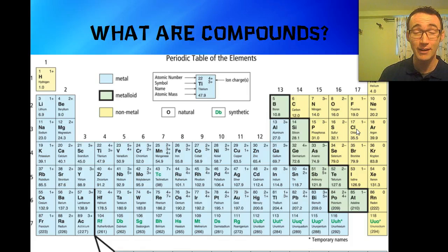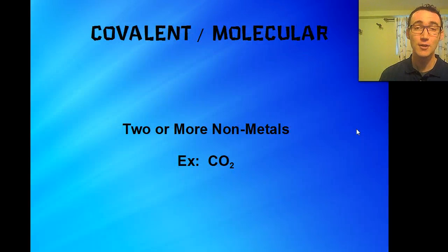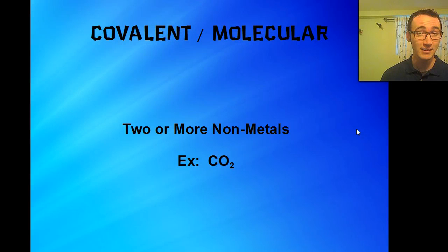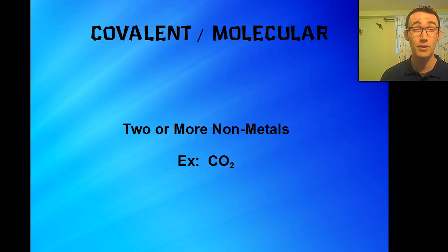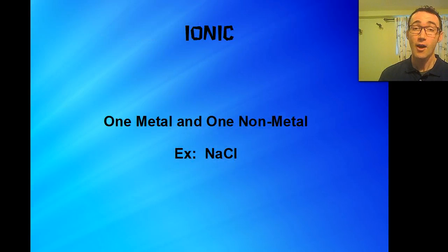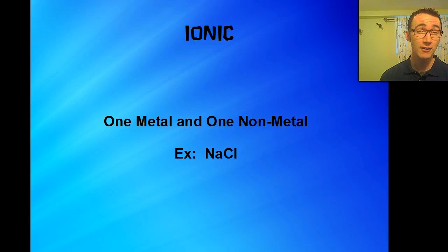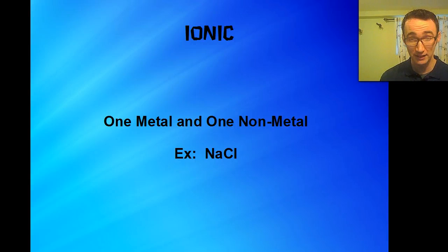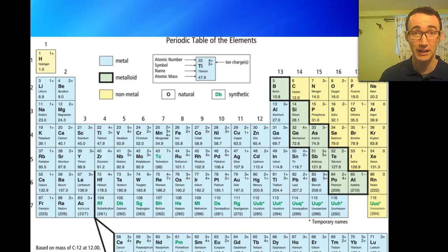So that's what a compound is. The two main types we're going to be studying this year are covalent, also called molecular — that's when you have two or more non-metals, like CO2 — or ionic compounds, which is what we're talking about today, and that's when you have one metal and one non-metal. An example like I just said is sodium chloride.